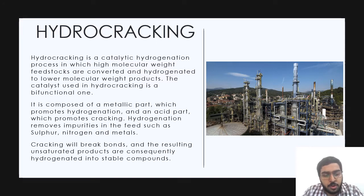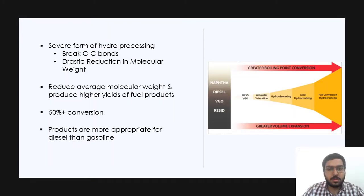The catalyst used in hydrocracking is bifunctional, composed of a metallic part which promotes hydrogenation and an acid part which promotes cracking. Hydrogenation removes impurities in the feed such as sulfur, nitrogen and metals. Cracking will break bonds and the resulting unsaturated products are hydrogenated into stable products. Hydrocracking is a very severe form of hydro processing that breaks carbon-carbon bonds and brings about a drastic reduction in molecular weight.